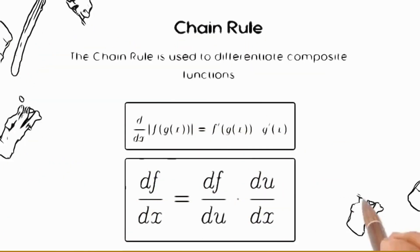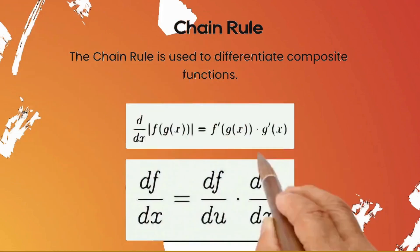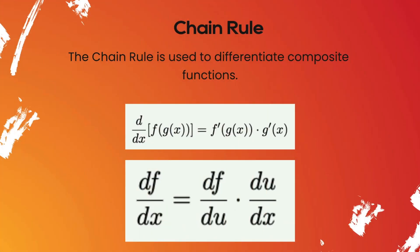Unit 3 starts with the chain rule. Basically, the chain rule is used to differentiate composite functions such as f of g of x, where g of x is the inner function and f of x is the outer function. The derivative of that is f prime of g of x times g prime of x. This is also written as df/dx equals df/du times du/dx using the chain rule, where u is the inner function.